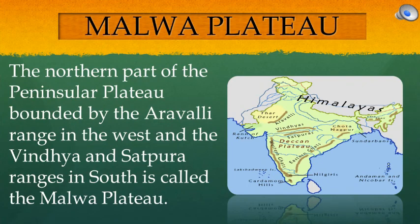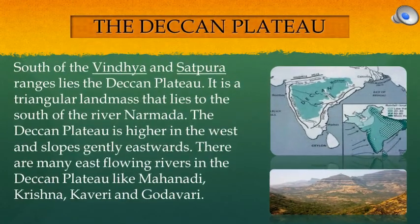The northern part of the Peninsular Plateau, bounded by the Aravalli Range in the west and the Vindhya and Satpura Ranges in the south, is called the Malwa Plateau. South of the Vindhya and Satpura Ranges lies the Deccan Plateau. It is a triangular landmass that lies to the south of the river Narmada. The Deccan Plateau is higher in the west and slopes gently eastwards. There are many east-flowing rivers in the Deccan Plateau like Mahanadi, Krishna, Kaveri and Godavari.